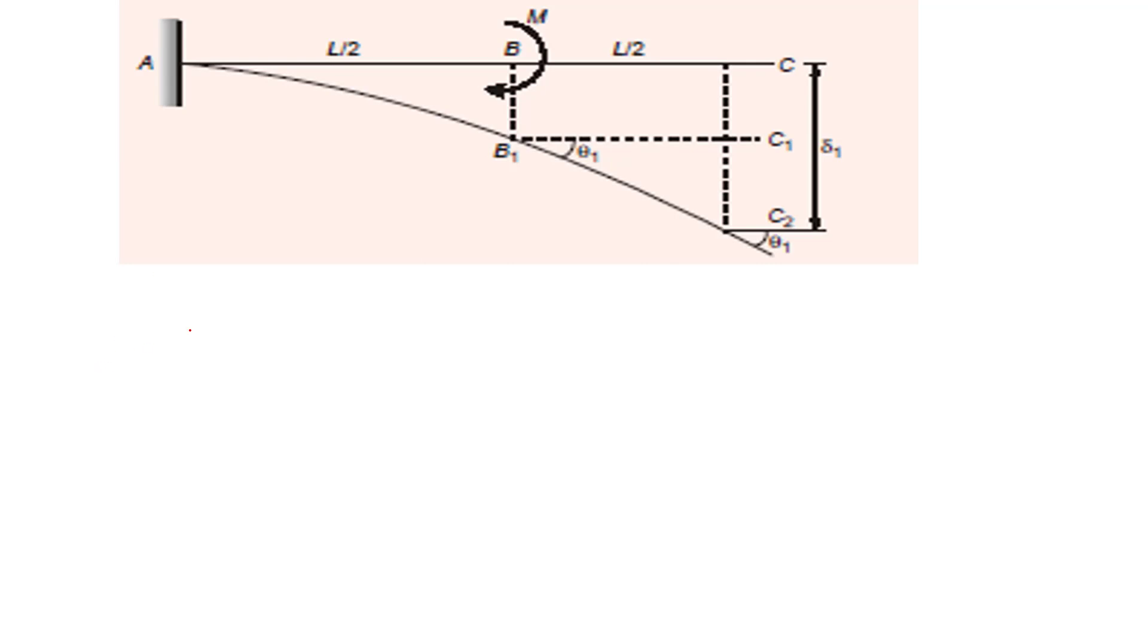We will write down deflection one, deflection δ1. Deflection one will be ML² divided by 2EI. This is the standard formula for cantilever beam with concentrated moment. M is M here and distance will be L/2 squared divided by 2EI. So it will be considered as delta one.